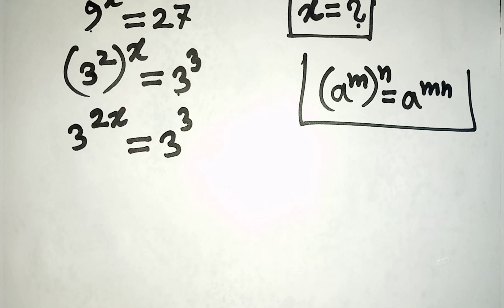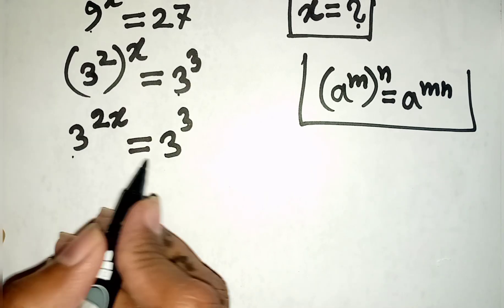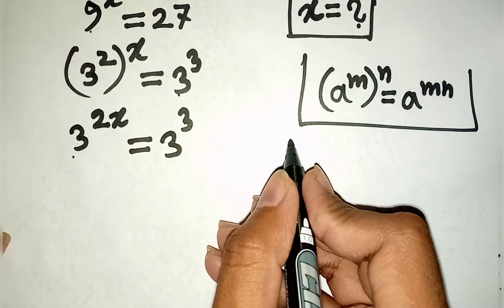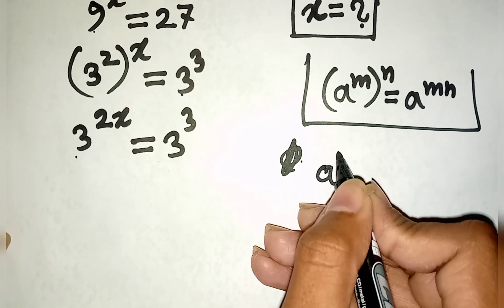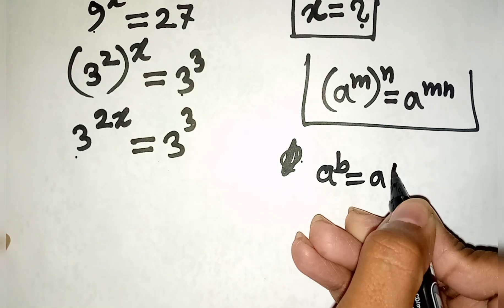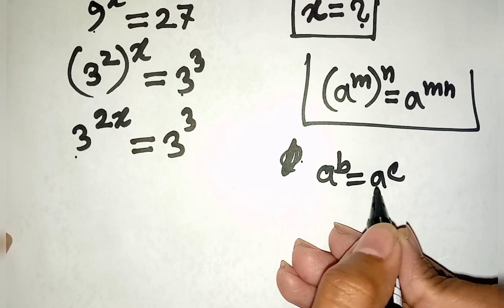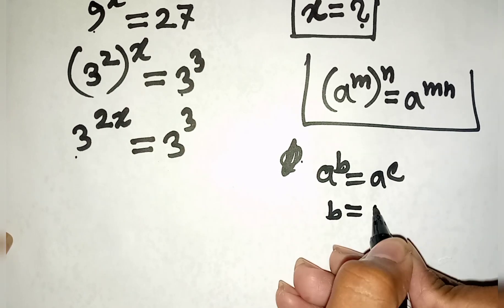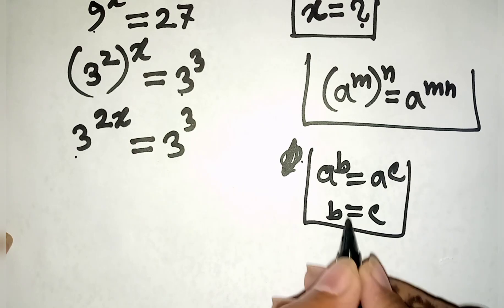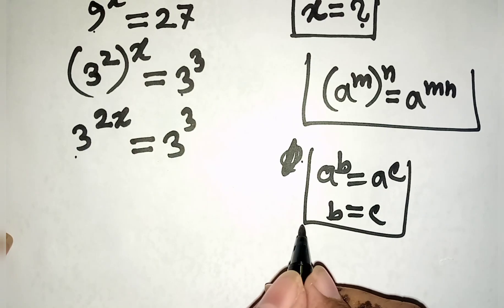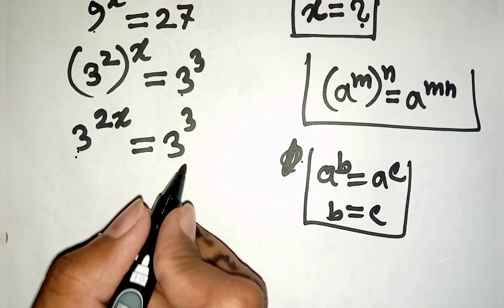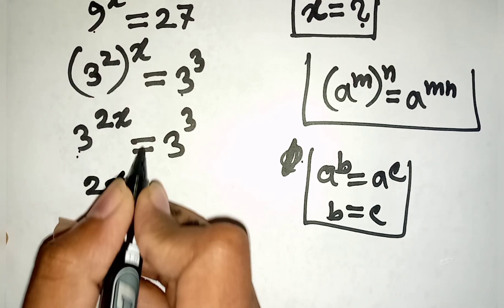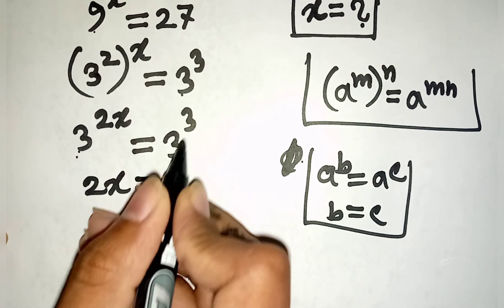Now we see both bases are 3, so the base is the same. According to the exponential rule, if a power b is equal to a power c, then since the base a is the same, it cancels, meaning the powers are equal. So 3 and 3 same base will be cancelled, giving power 2x equal to power 3.